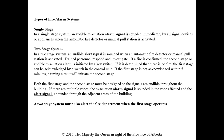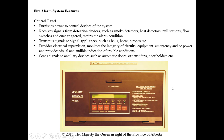Both the first and second stages must be designed so signals are audible throughout the building. In a multi-zone system, the evacuation alarm sounds in the affected zone and the alert signal sounds in adjacent areas, so nearby occupants know there's a fire and can potentially evacuate as well. A two-stage system must also alert the fire department when the first stage operates — they'll call the business to confirm whether it's a real alarm.